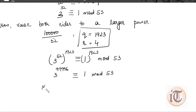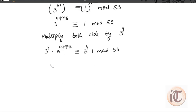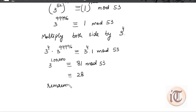We now multiply both sides by 3 to the power 4. On the left side, the exponent becomes 99,996 plus 4, which equals 1,00,000. On the right side, we get 3 to the power 4 times 1, mod 53. Since 3 to the power 4 is 81, and 81 mod 53 equals 28, the remainder when we divide 3 to the power 1,00,000 by 53 is 28. This is how we apply Fermat's theorem to this type of question.